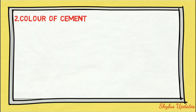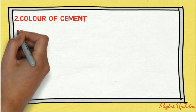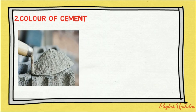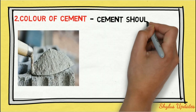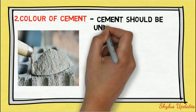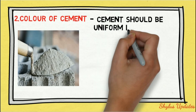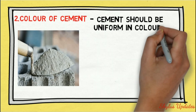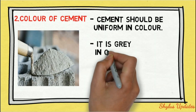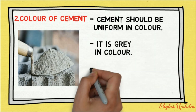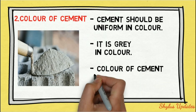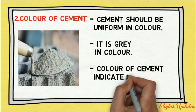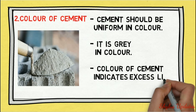Color of cement: cement should be uniform in color — it is gray in color. The color of cement indicates excess lime or clay and the degree of burning.